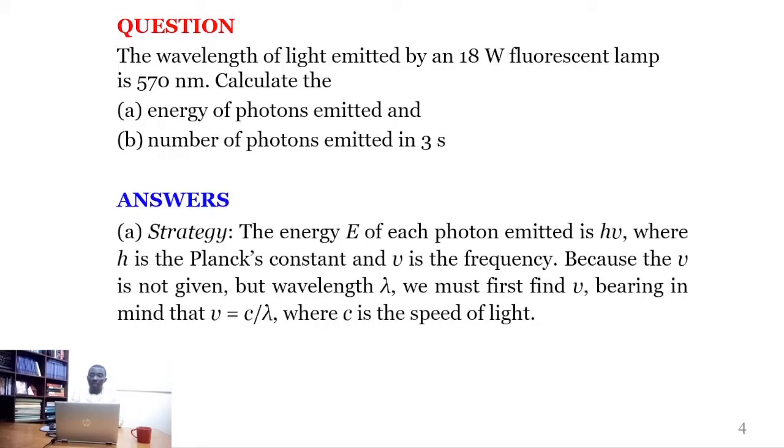The strategy for part A is firstly we need to find the energy emitted by each photon, and that energy is the product of the Planck's constant times the frequency of light. However, the frequency is not given but the wavelength is given.